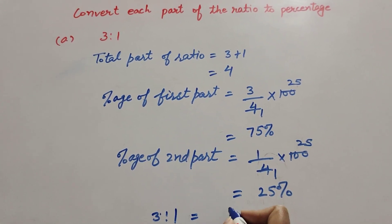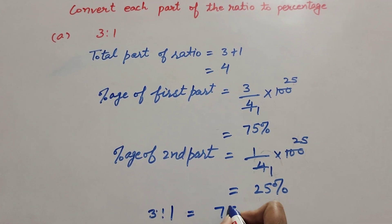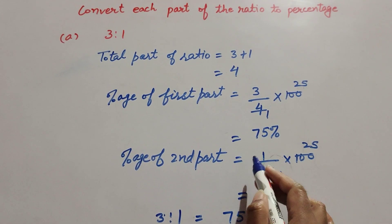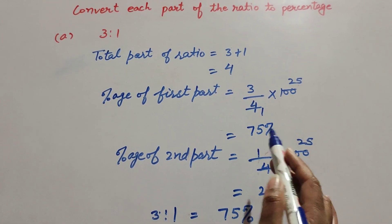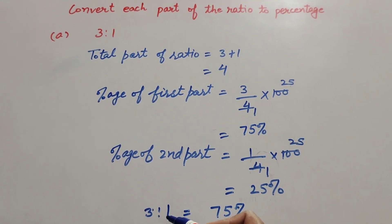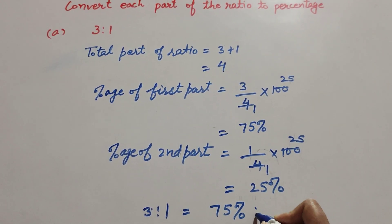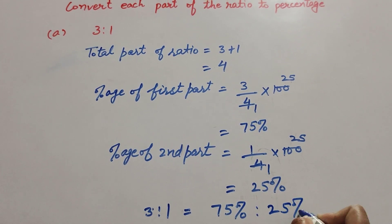We change this ratio into the percentage: 75 percent ratio. So 3 is the first part of ratio equal to 75 percent. Ratio second part, it is equal to 25 percent.